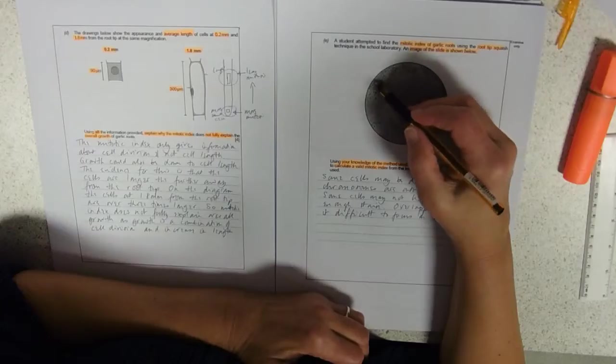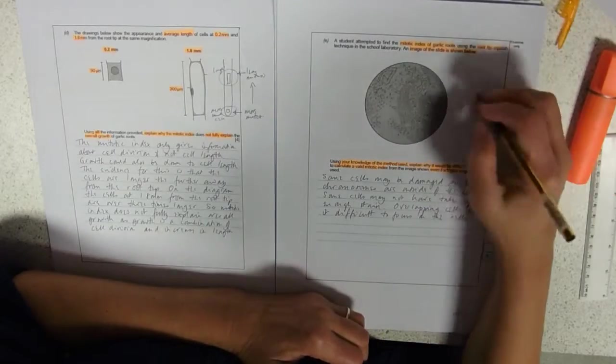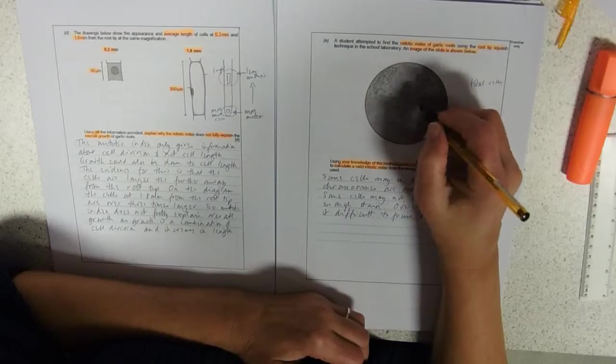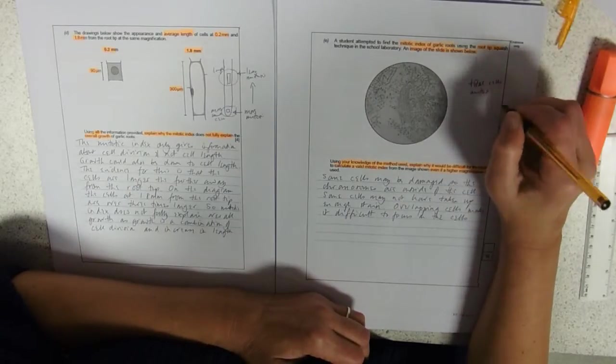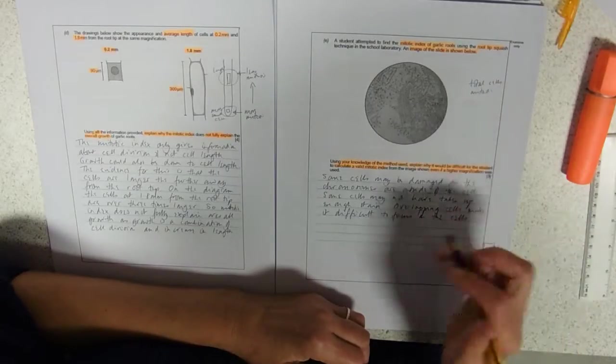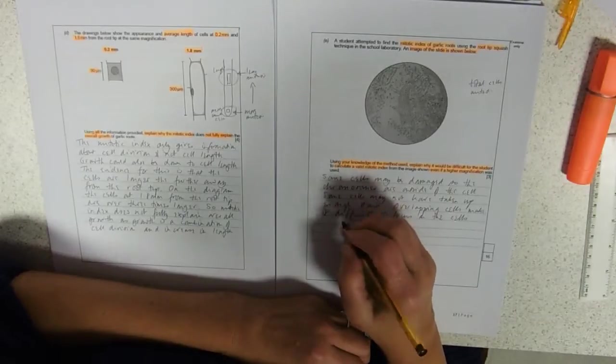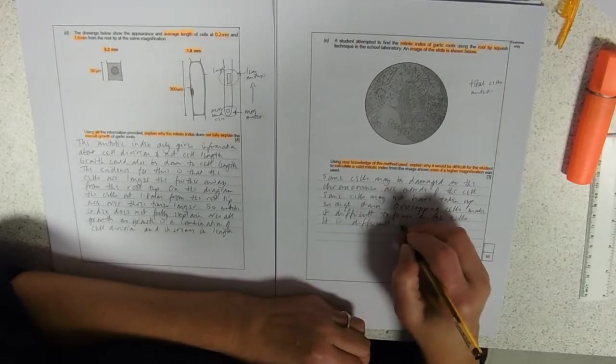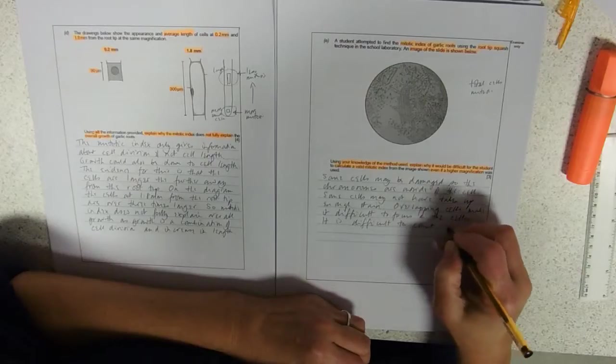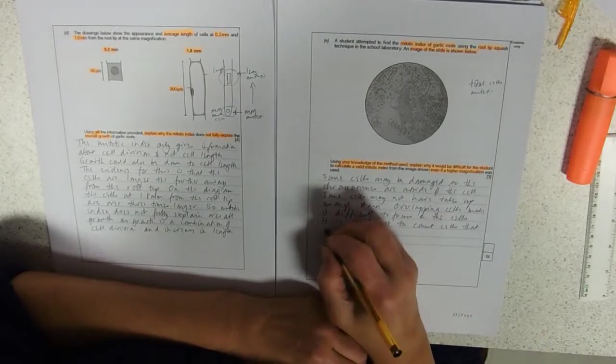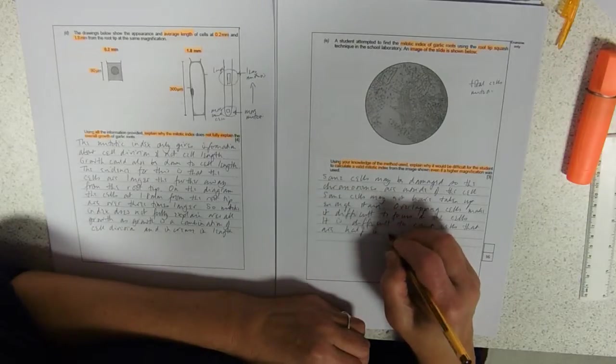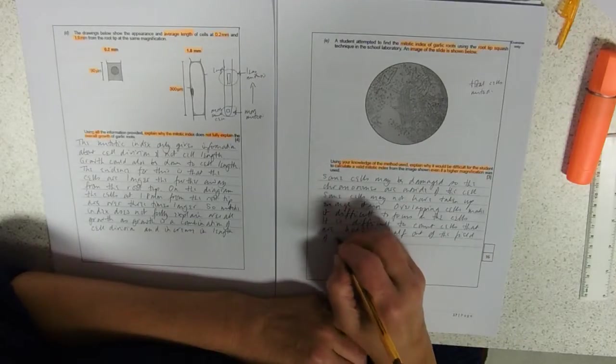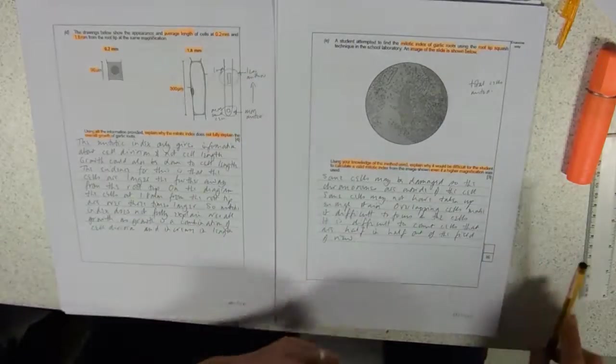And then at the edges, do you count these ones that are half in, half out? Because remember what we need to do in mitotic index, we need the total cells. And we need the ones in mitosis. So, do you count the ones at the edges that are half in, half out? So, it's difficult to count cells that are half in, half out of the field of view.